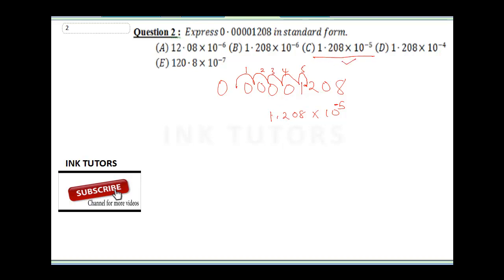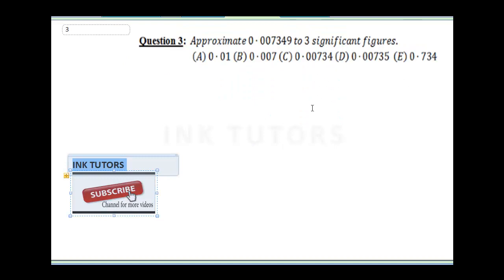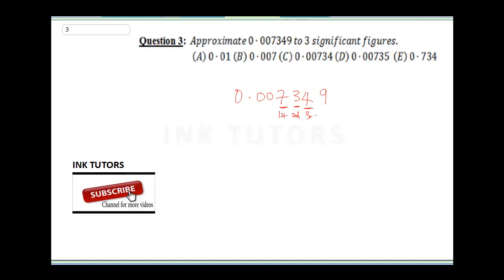Question three: Approximate 0.0073449 to three significant figures. When you have a decimal, the significant figures are the non-zero digits. So 7 is the first significant figure, 3 is the second, and 4 is the third. Because the next digit is 9, we round up, so 4 becomes 5. The correct answer is D: 0.00735.